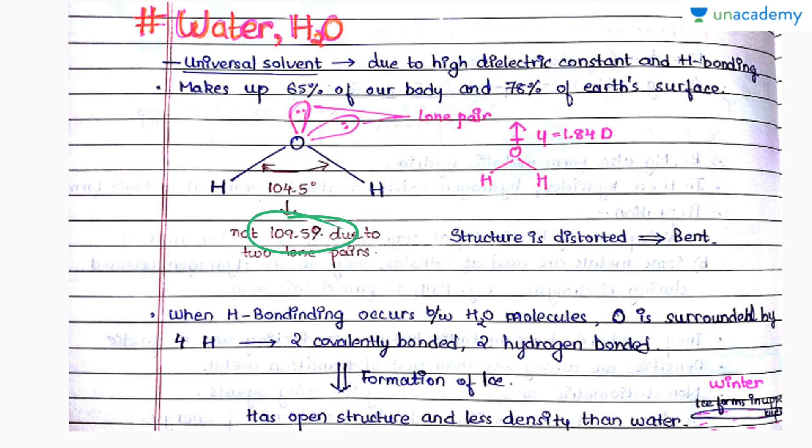The expected angle is 109.5 degrees, the tetrahedral angle. Water is showing an angle lesser than it, so the structure is distorted or bent. As these bonds are polar, we will have a dipole moment, so yes, water does have a dipole moment of 1.84 Debye.